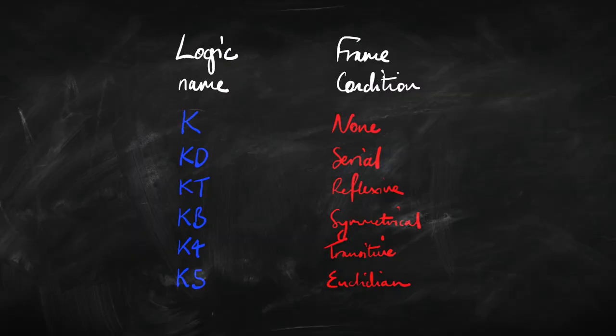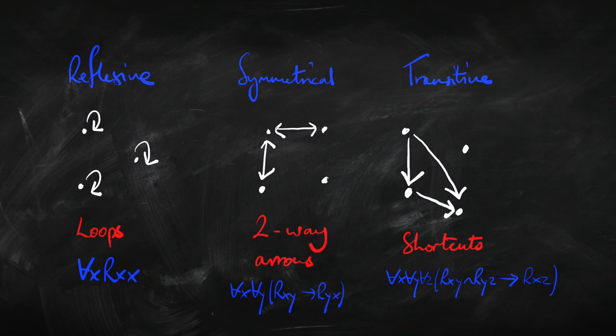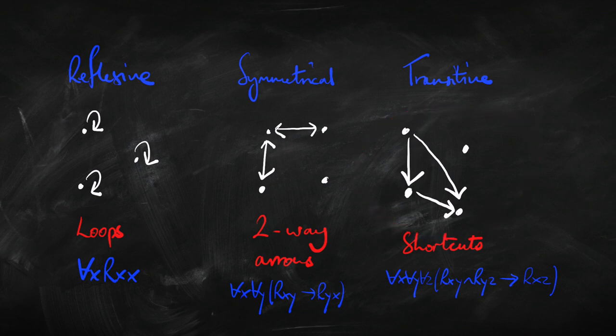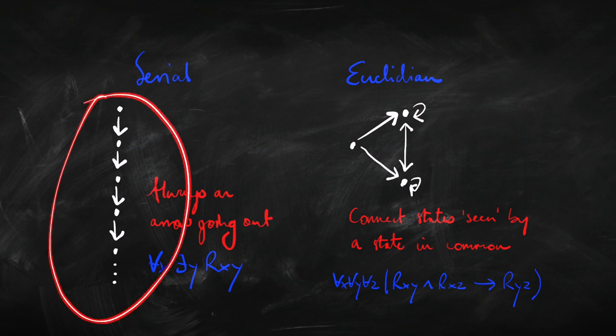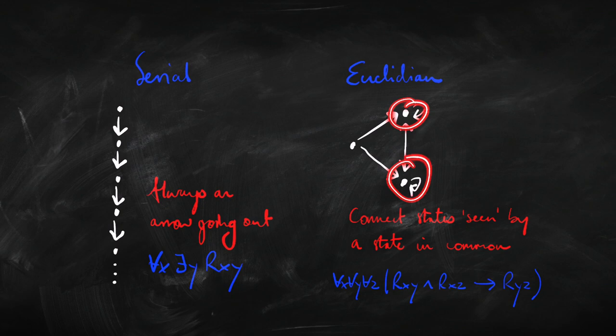A reminder of what these conditions look like. Reflexive is all about each world having a loop on it. Symmetrical means that any arrow is a two-way arrow. Transitive means that whenever you've got arrows, you've also got shortcuts. Serial means that every world has an arrow going out of it. And Euclidean — this is the tricky one — it means whenever you've got worlds that can both be seen by some world, there's an arrow between those worlds.